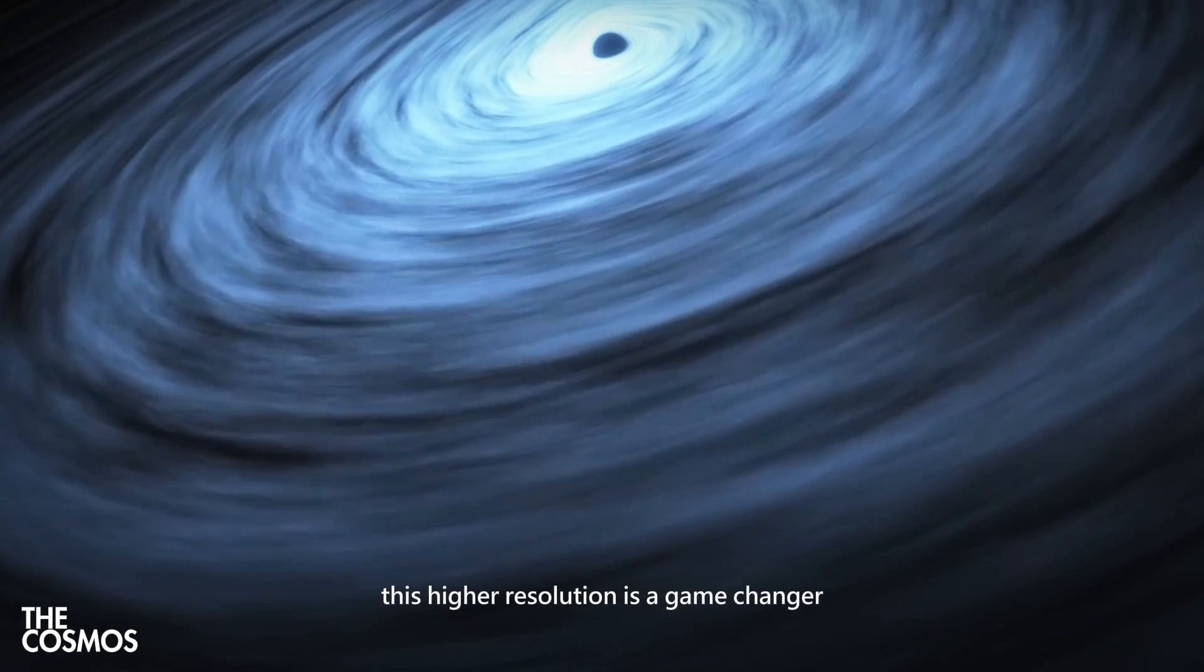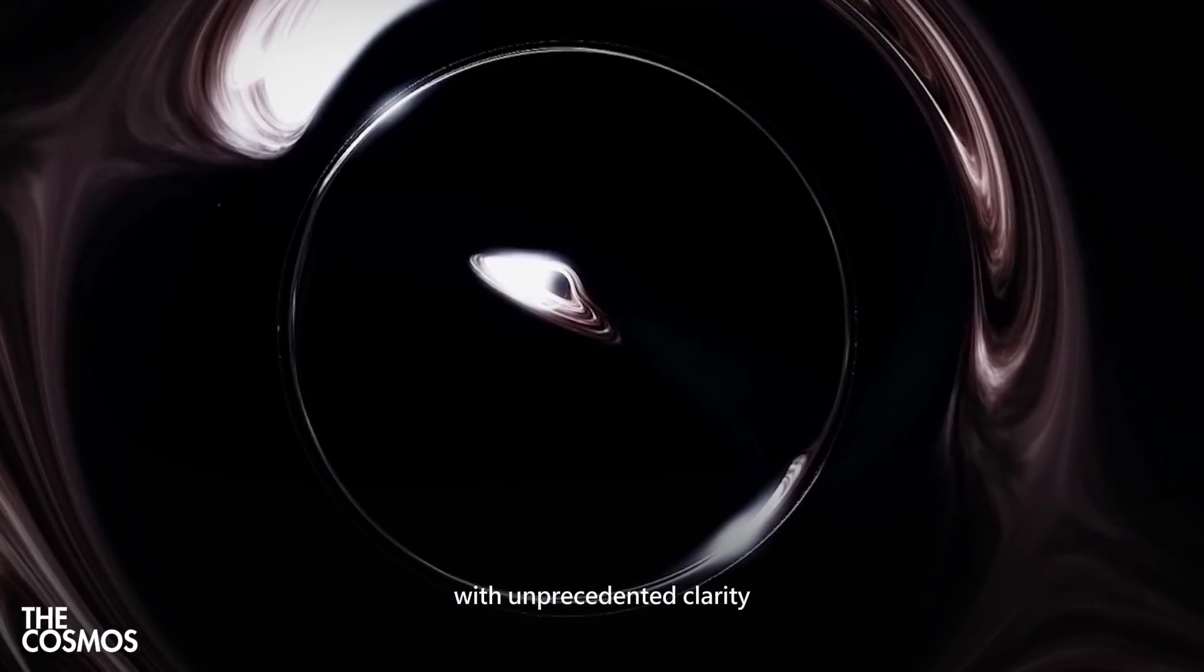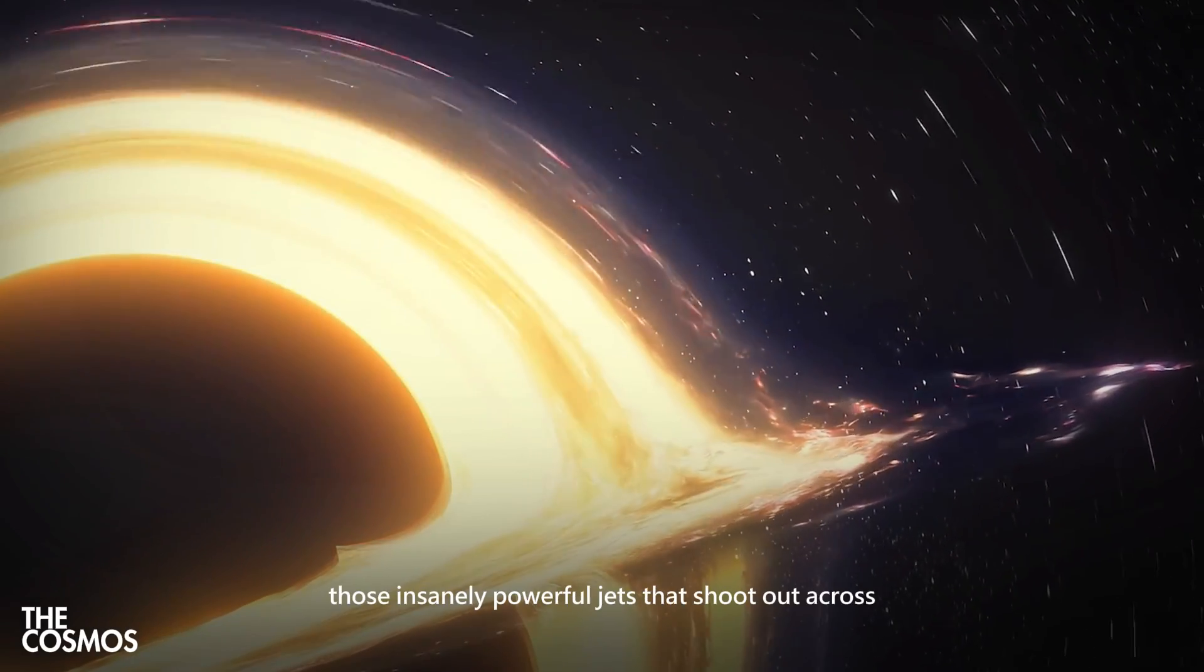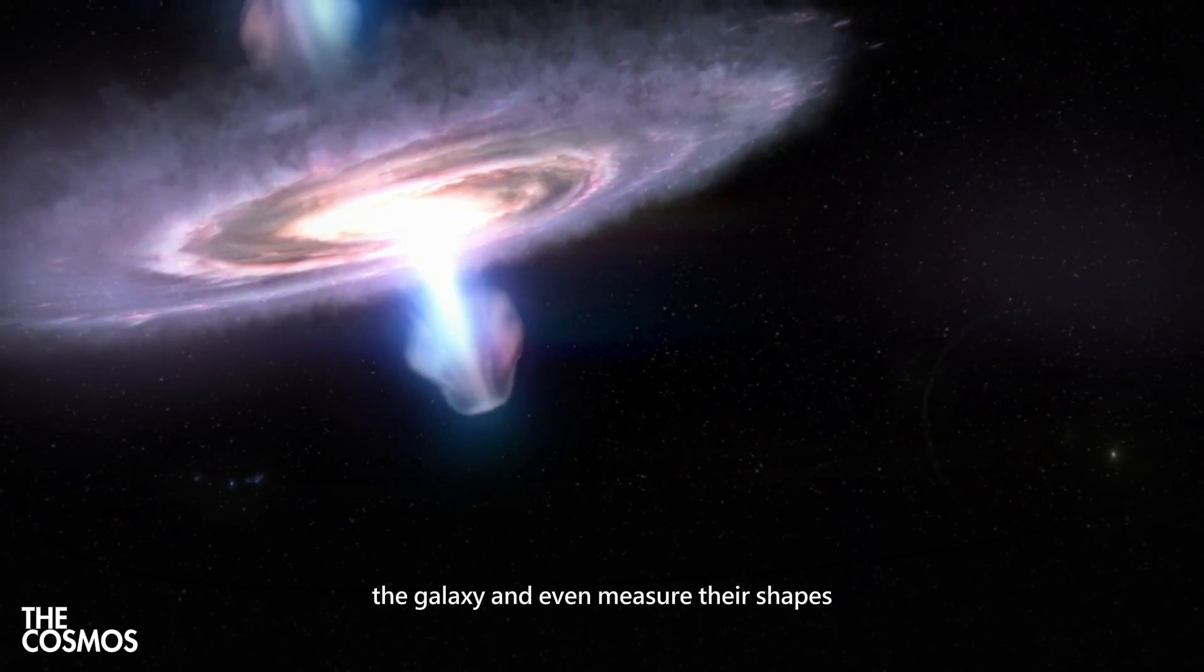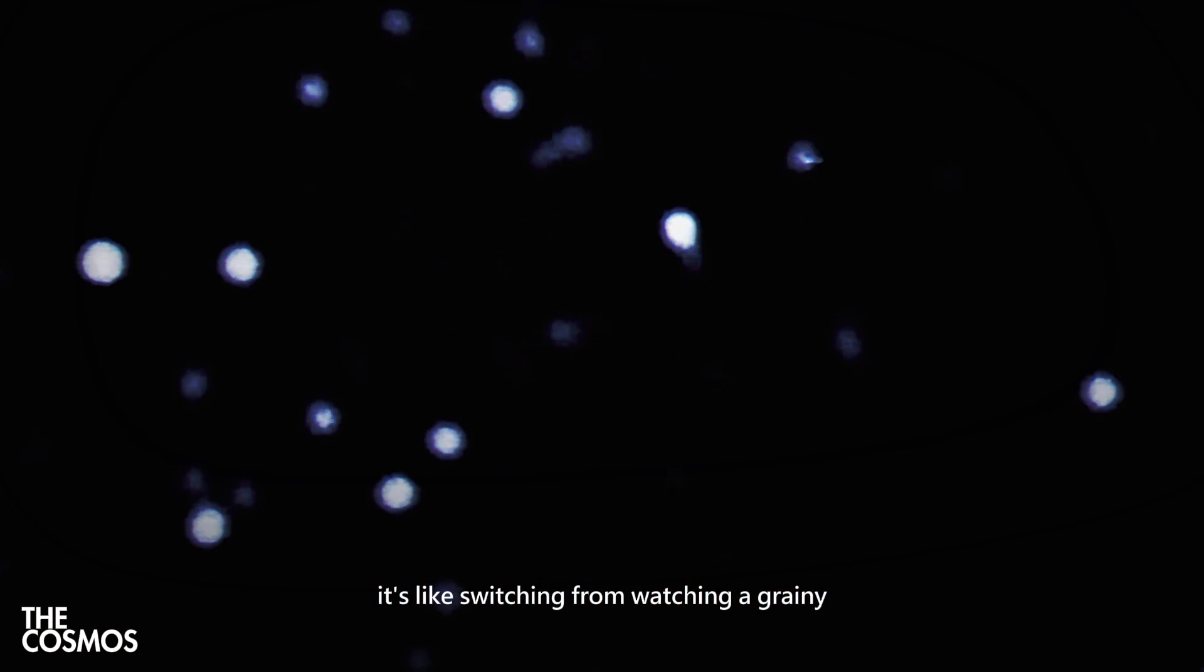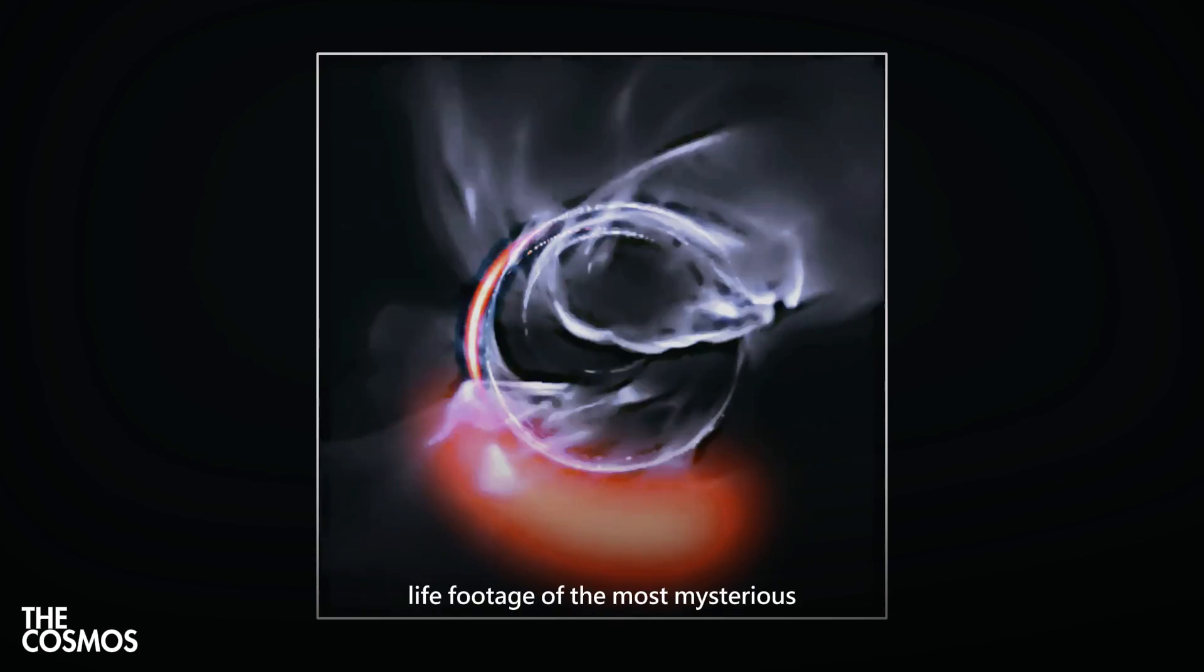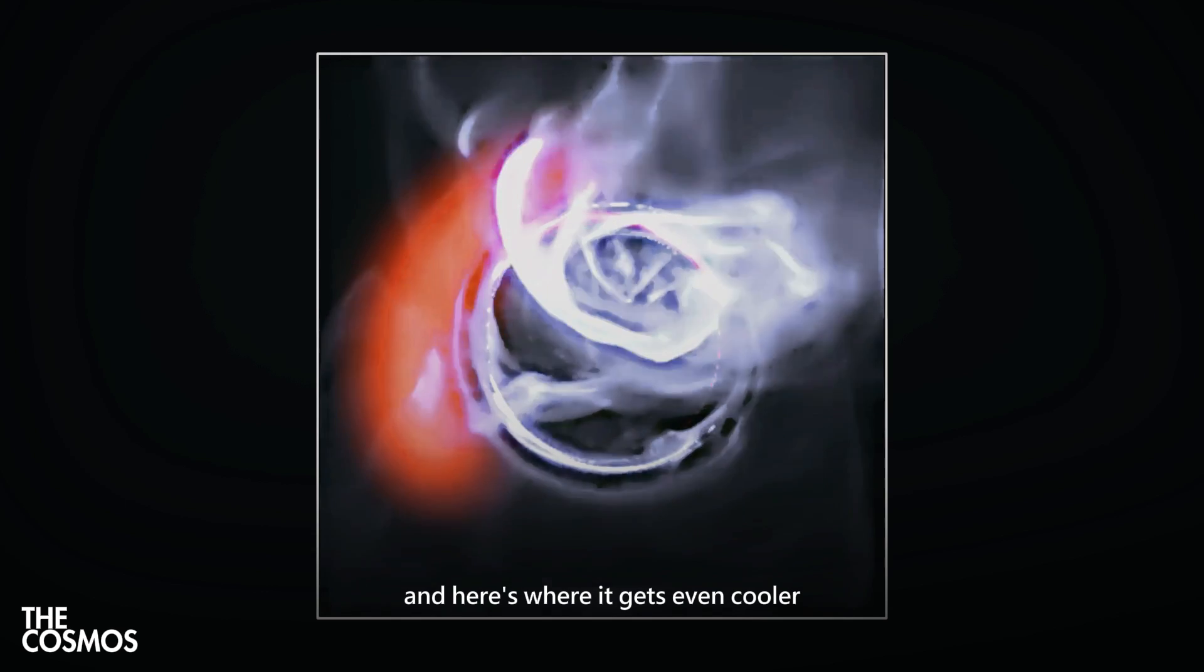This higher resolution is a game-changer. It means we'll be able to see the structures around black holes with unprecedented clarity. We can study how they suck in matter, how they form those insanely powerful jets that shoot out across the galaxy, and even measure their shapes, spins, and orientations more accurately. It's like switching from watching a grainy VHS tape to 4K Ultra HD, except this is real-life footage of the most mysterious objects in the universe. And here's where it gets even cooler.